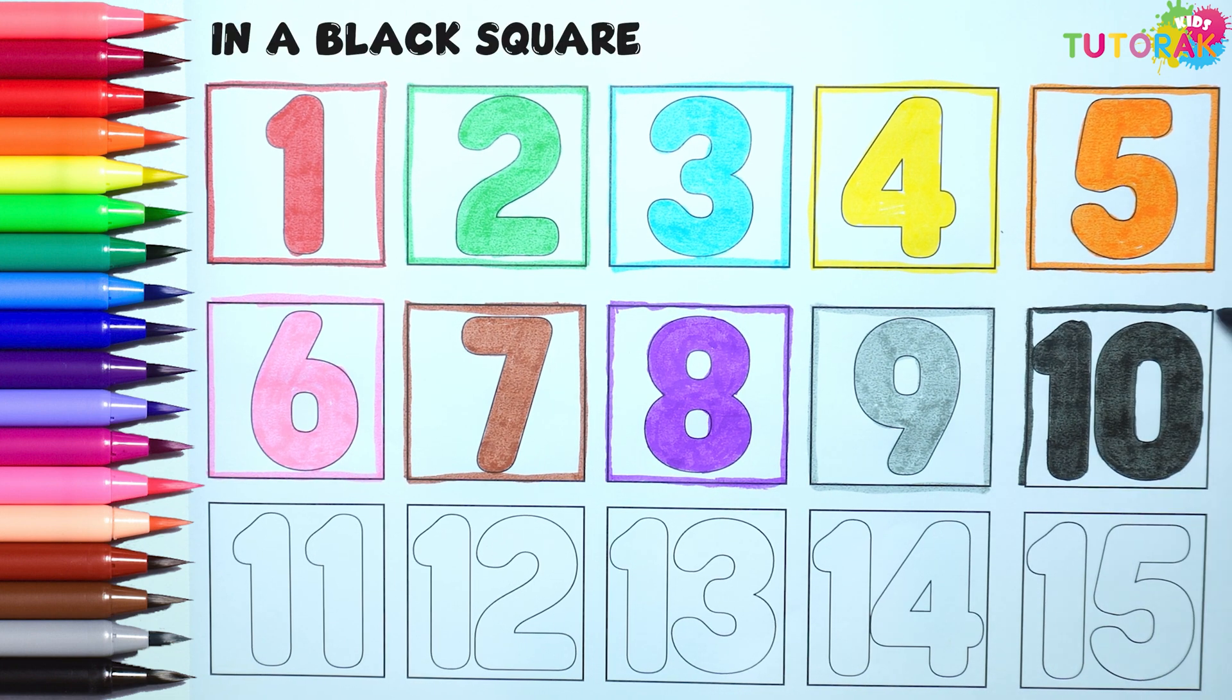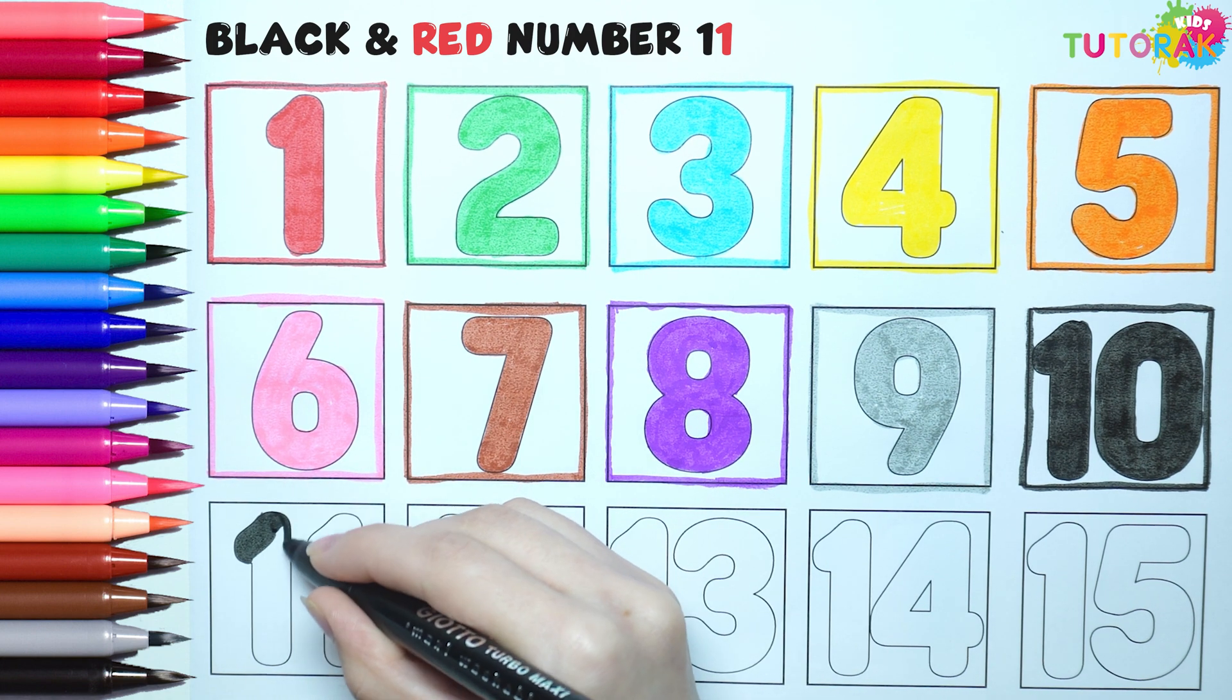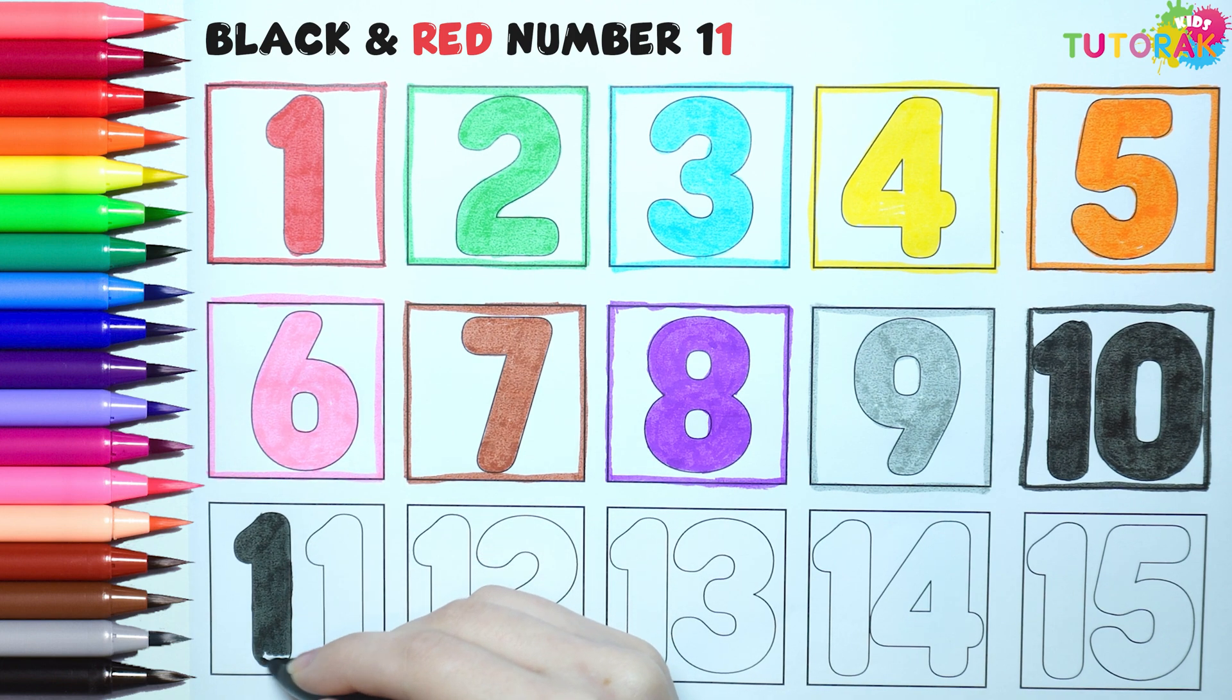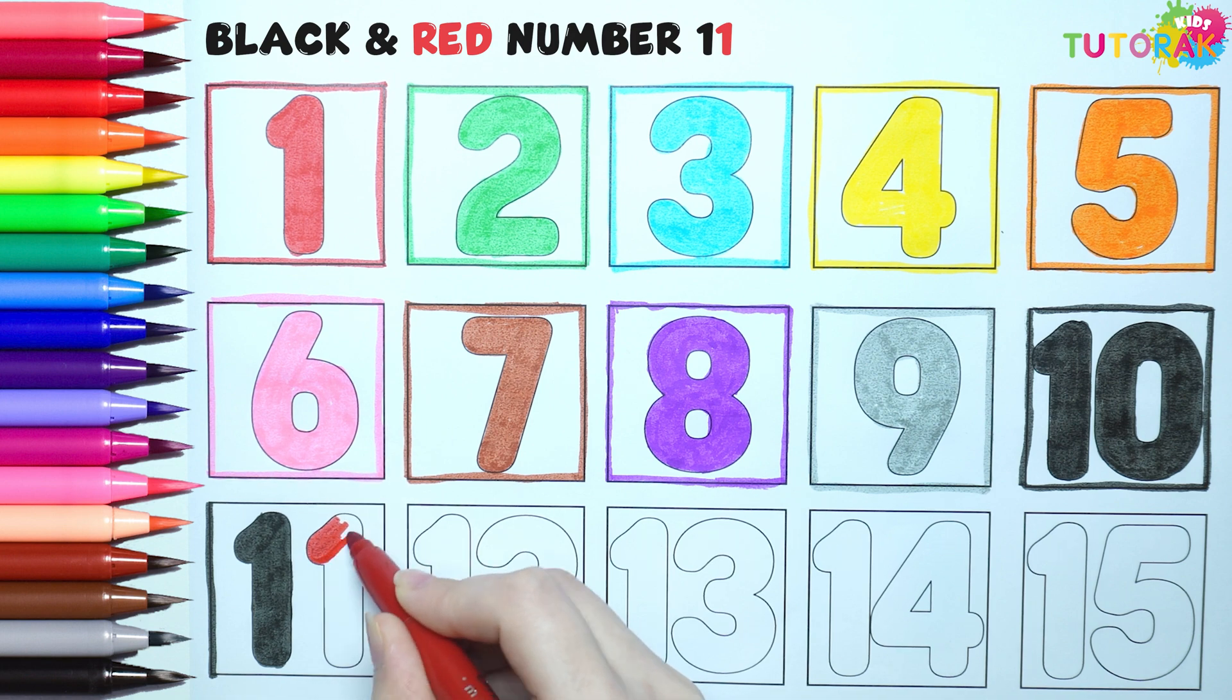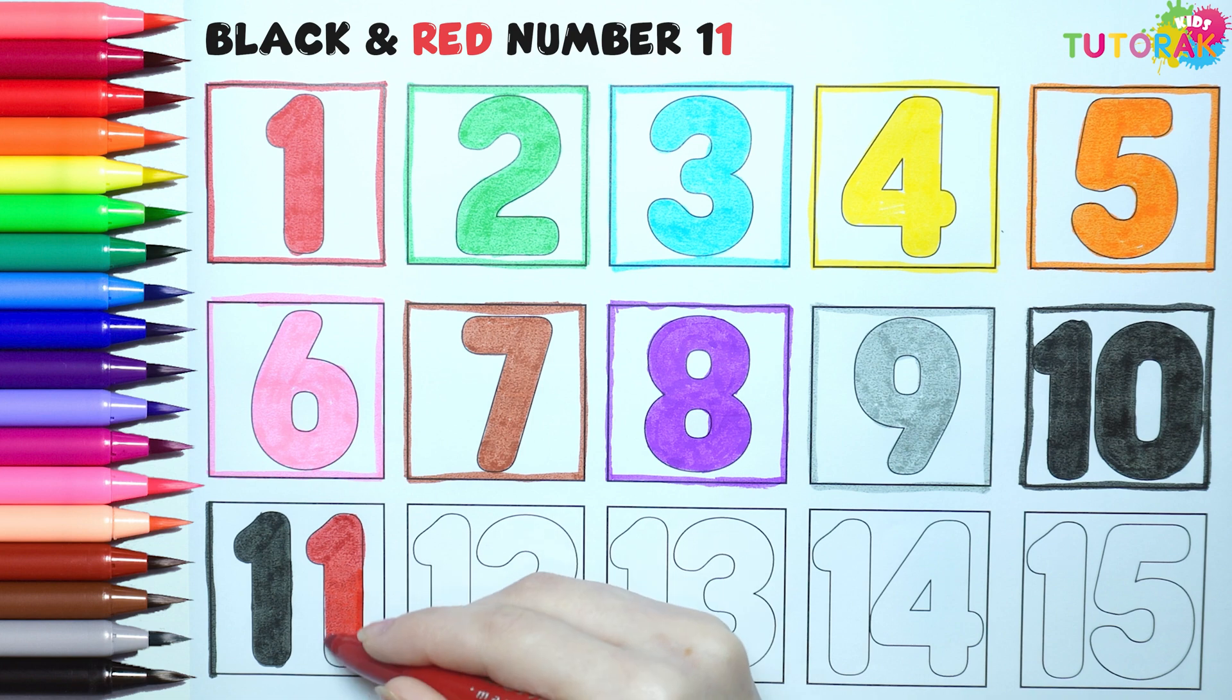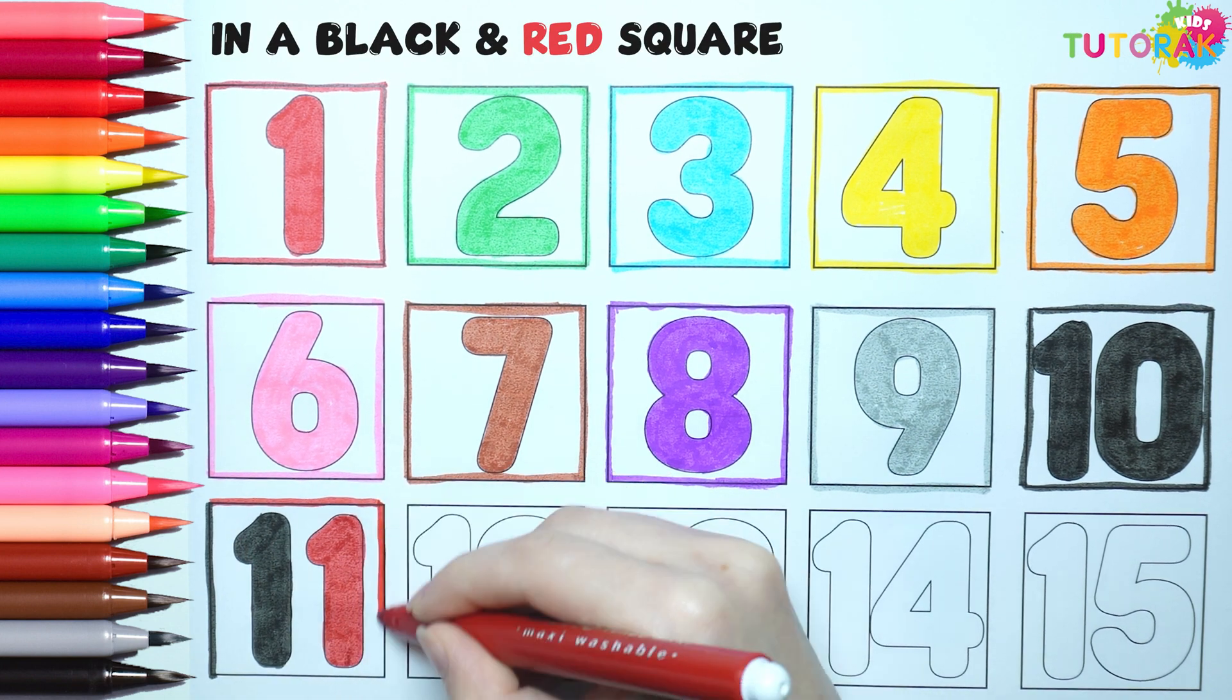in a black square. Now 10 plus 1 make 11. Let's mix the colors, black and red. We have black and red 11 in a black and red square.